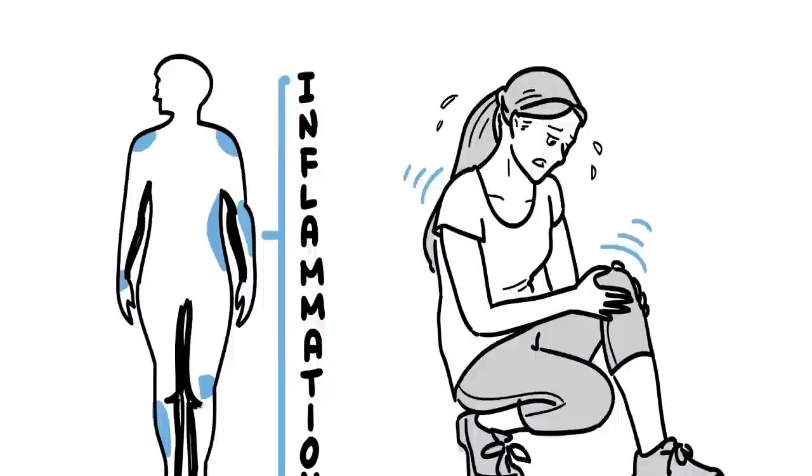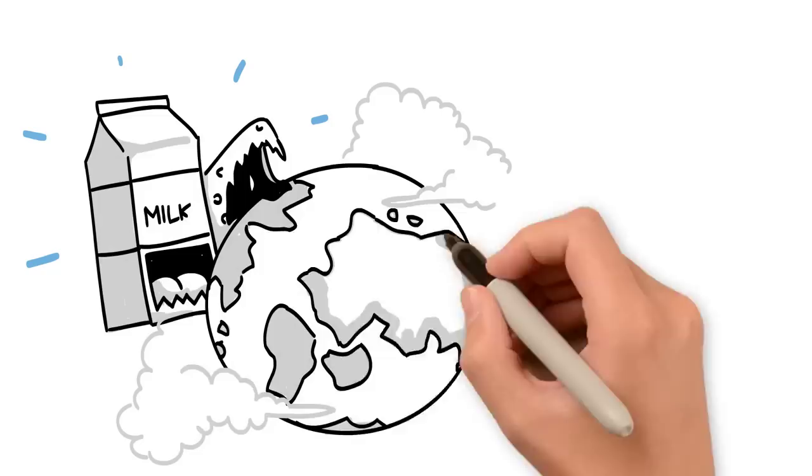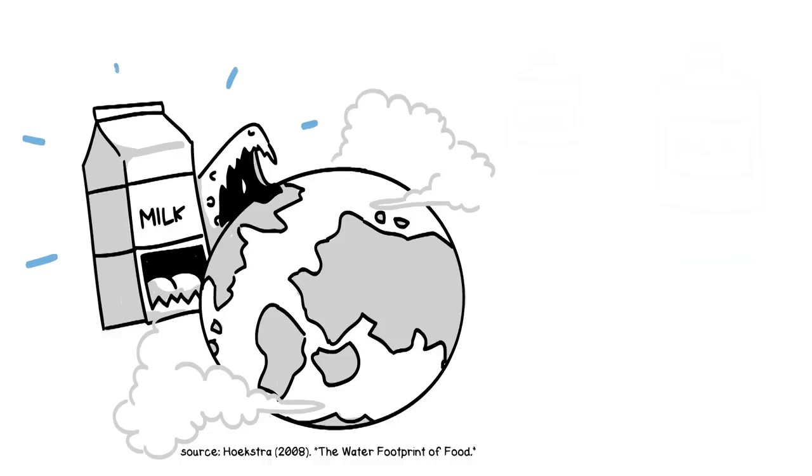Dairy doesn't do your body good, but it also doesn't do any good for the planet. It takes 1,000 gallons of water to produce one gallon of cow's milk. Dairy also contributes more than its fair share to the degradation of our natural resources, waste, and CO2 emissions.